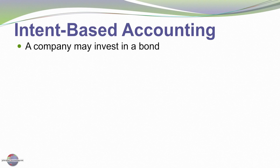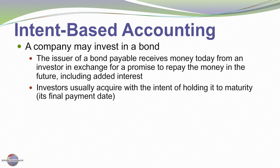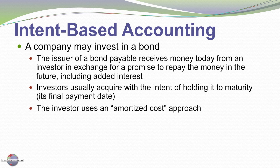A company may buy a bond-type investment — a promise from another company to repay cash over time. The issuer of a bond payable receives money today from an investor in exchange for a promise to repay that money in the future with accrued interest; it's really just debt. Investors usually acquire those investments with the intent of holding them to maturity, to collect the interest and the principal, and that typically requires the amortized cost approach of accounting.